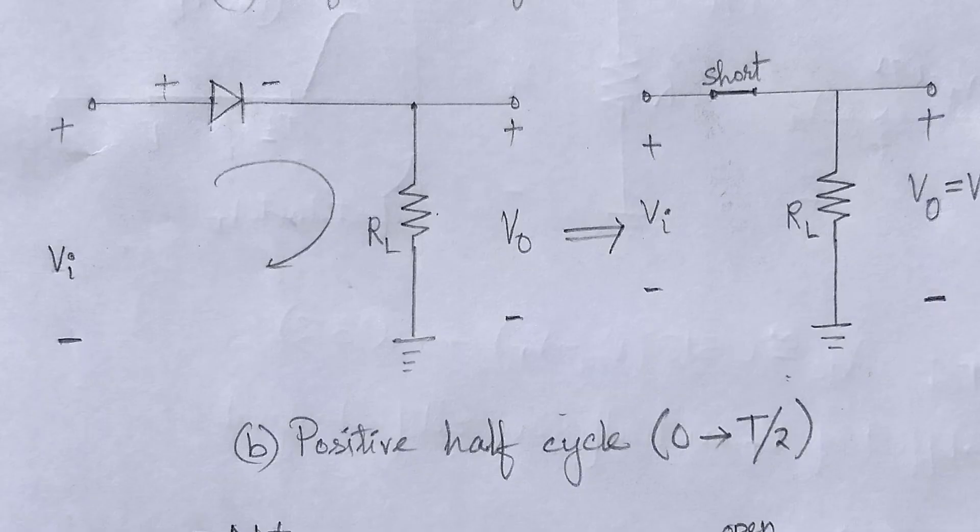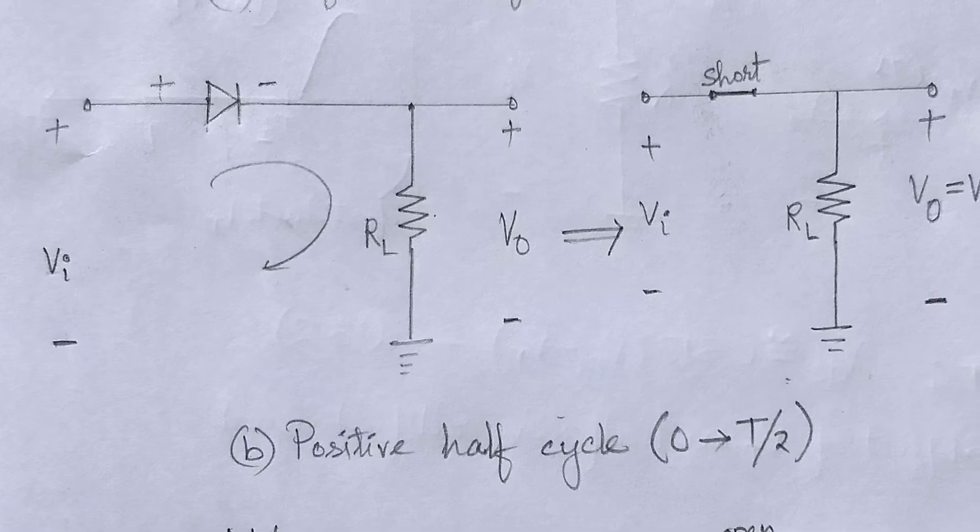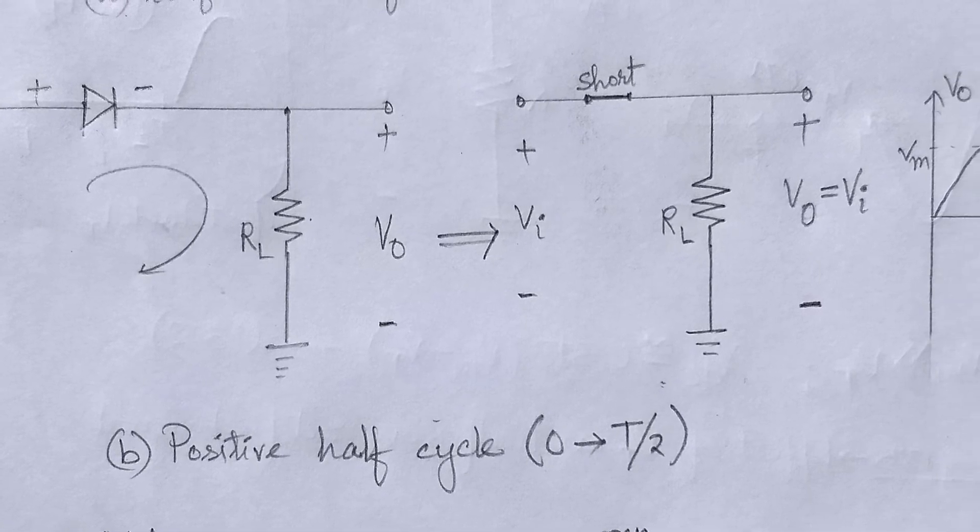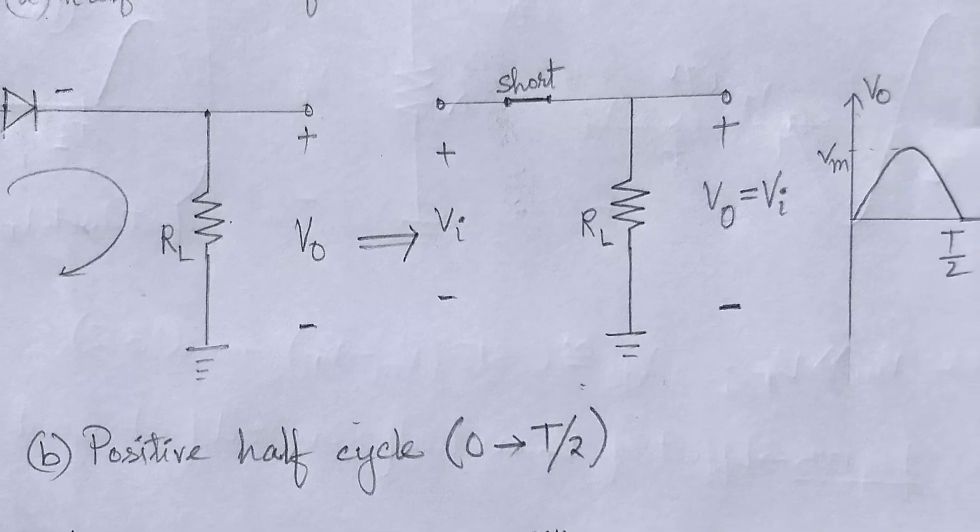During the time interval 0 to T by 2, as shown in the figure B, the polarity of the applied voltage Vi will pressure in the indicated direction and the diode is on, or acts as a short circuit. Output signal during this period is exact replica of the input signal.